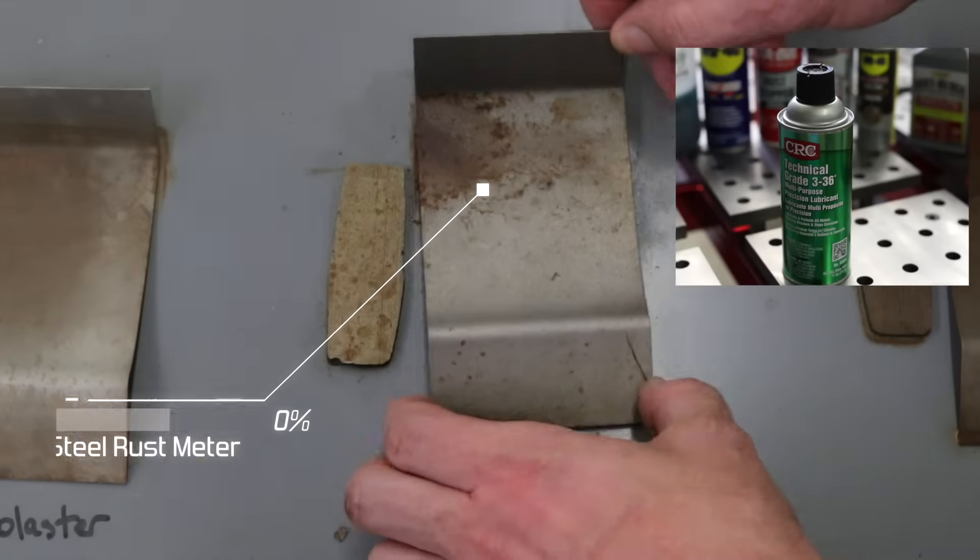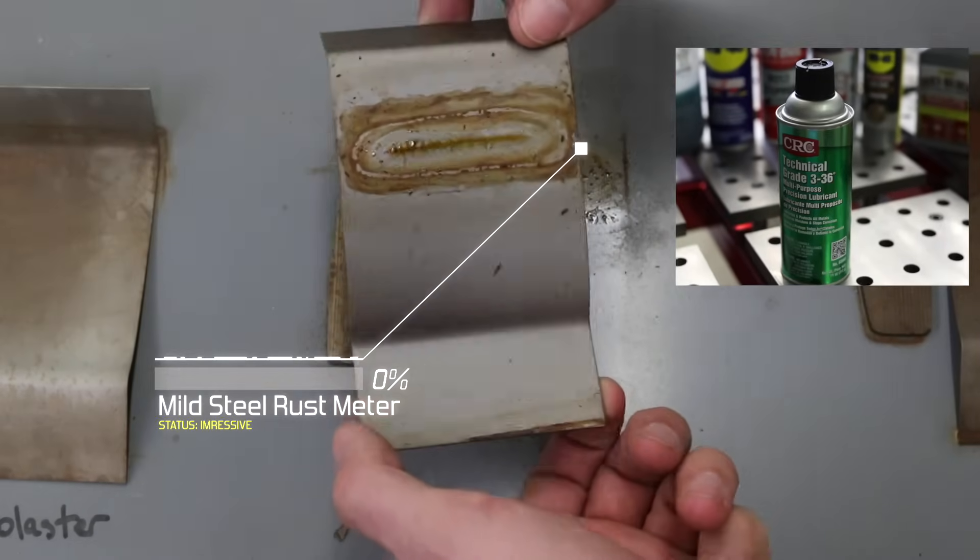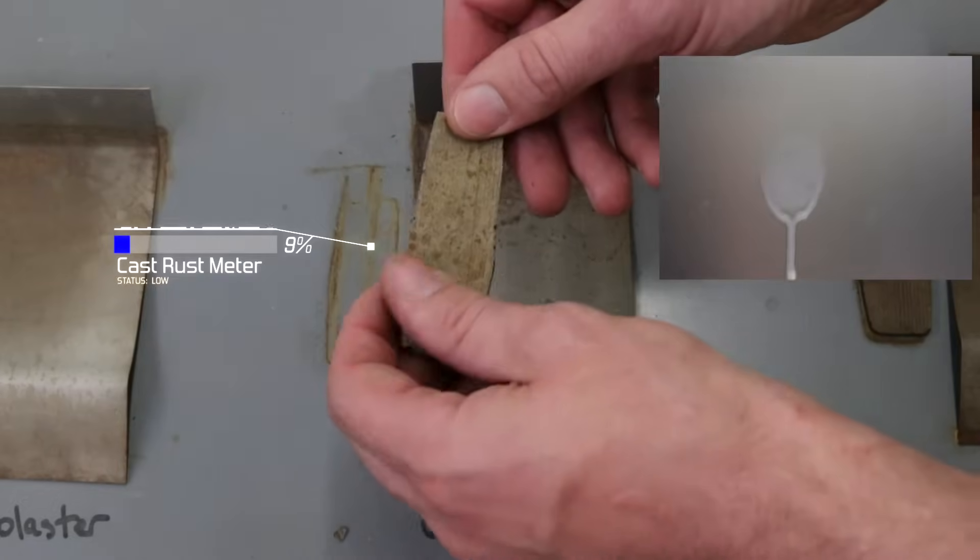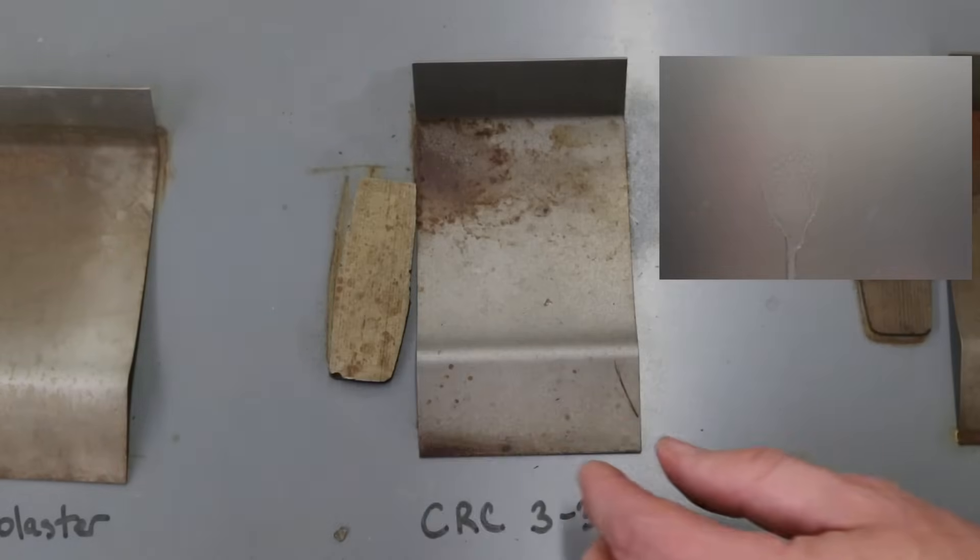The CRC did pretty well in the rust department. But it also had some tarnishing that was hard to remove. The cast iron also had a little bit of surface rust, but not too bad.